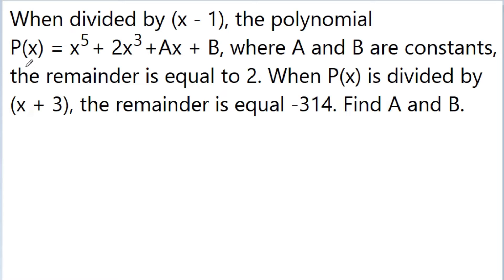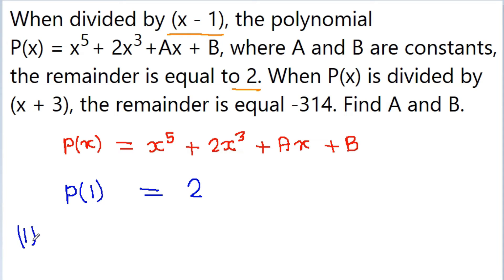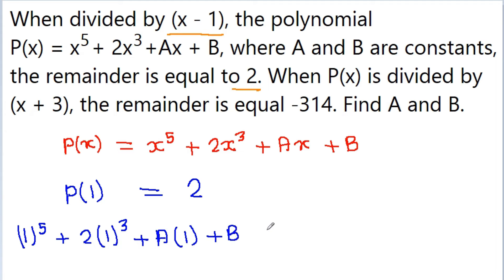The polynomial given is p(x) = x to the power 5 plus 2x cubed plus ax plus b. Now it is given that when this polynomial is divided by x minus 1, we get a remainder equal to 2. So by the remainder theorem, p(1) must be equal to 2, and p(1) will be 1 to the power 5 plus 2 times 1 cubed plus a times 1 plus b, that is equal to 2.